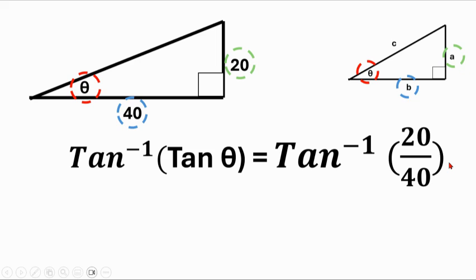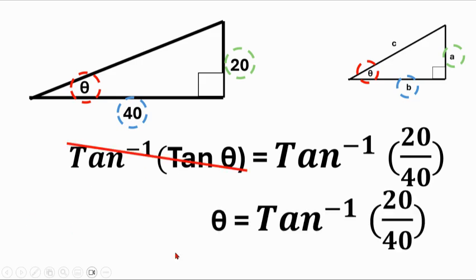So when you write it out like this, now you can see that the tangent minus 1 and the tangent will cancel out. But the part on the right side, of course, doesn't cancel out.